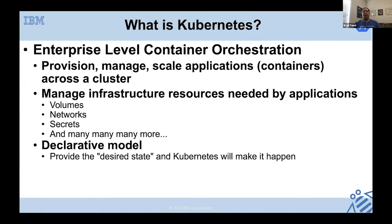The beauty of Kubernetes is it has a declarative model. You get to declare what you want to happen — you tell Kubernetes you want six copies of your application up and running, and Kubernetes takes your declaration and actually creates those six copies and gets them up and running.